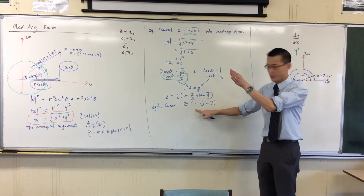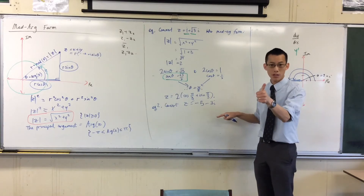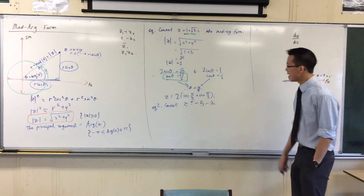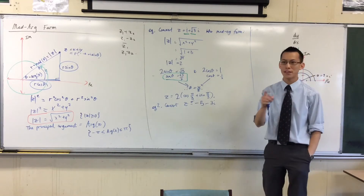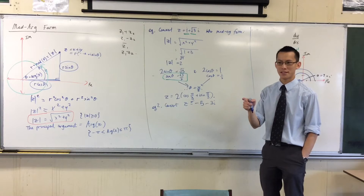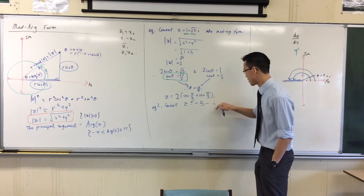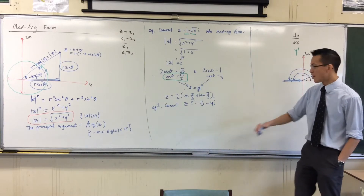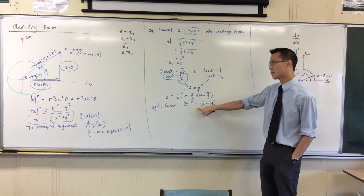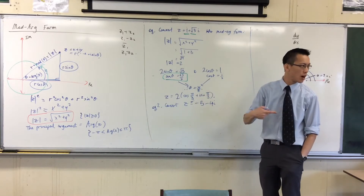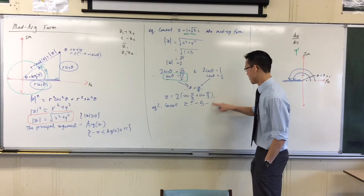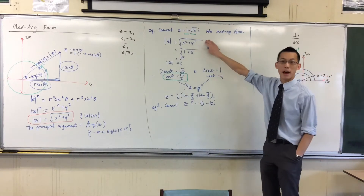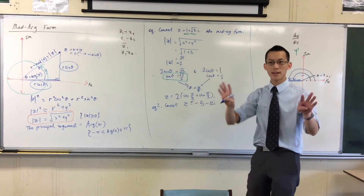So you can see I've gone to the left and I've gone down — third quadrant, so far so good. Now how do I convert this? Someone said four to try to help with nicer numbers. Okay, well I'm going to go to Pythagoras next.